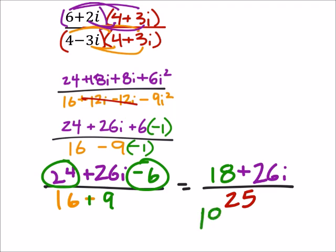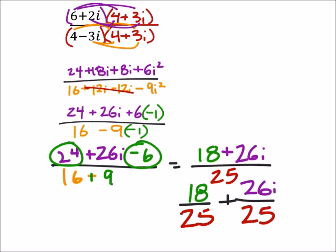I've still got 18. And I'm going to add the 26i. But both of these had common denominators of 25. See, now this does take on this form of a plus bi.